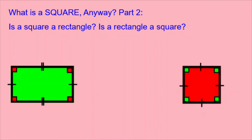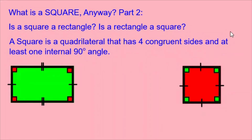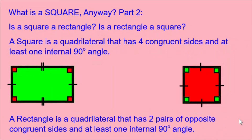The answer is going to be yes and no. Let's look at the definition of a square first. A square is a quadrilateral that has four congruent sides and at least one internal 90-degree angle. We can see in this diagram that the four sides are congruent, as shown with these little lines, and that it has four internal 90-degree angles, as shown with the little squares on the corners. Now, is a rectangle a square? A rectangle has four internal 90-degree angles, but it doesn't necessarily have four congruent sides. Instead, it has two pairs of congruent sides. Let's look at the definition of a rectangle.